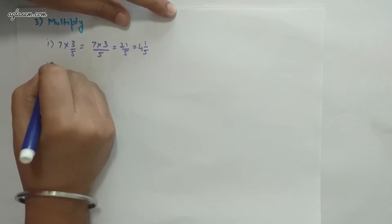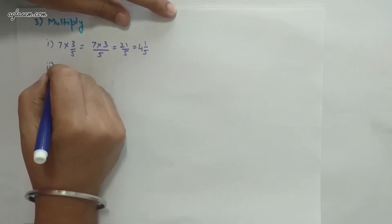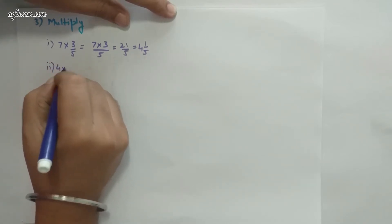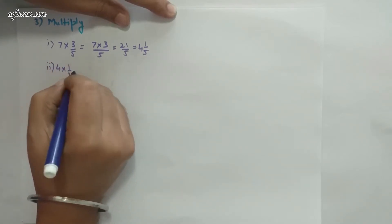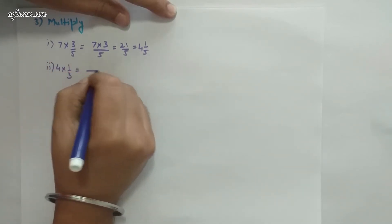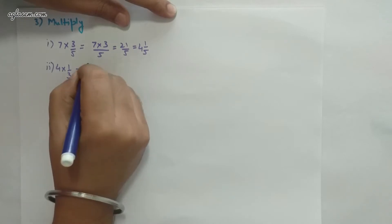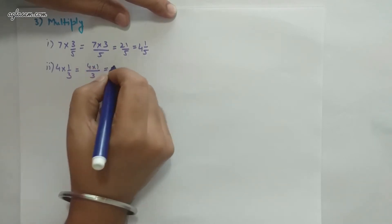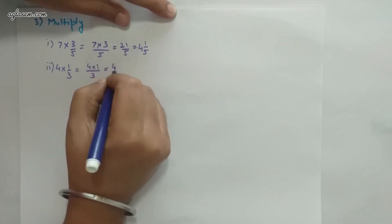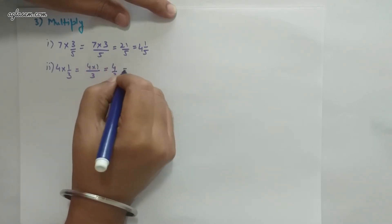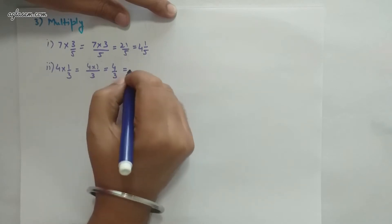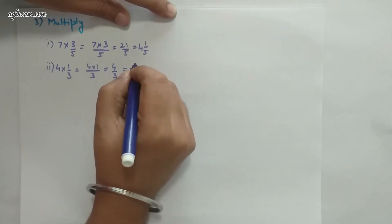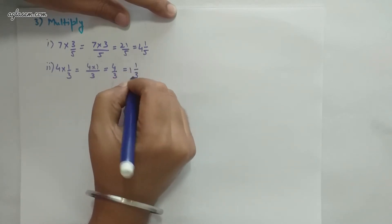Part 2: 4×(1/3). Multiply the numerators: 4/3, which can be written as 1 and 1/3.